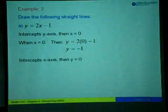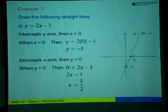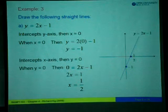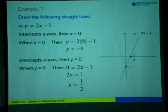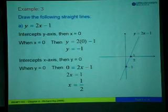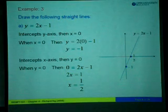To find the x-intercept, y must equal 0. When y is 0, substituting into the equation gives 0 equals 2x minus 1. Shifting the negative 1 to the left, we get 2x equals 1, therefore x equals one-half. Next, mark the point y equals negative 1 on the y-axis and x equals one-half on the x-axis, then join these two points to get the straight line y equals 2x minus 1.